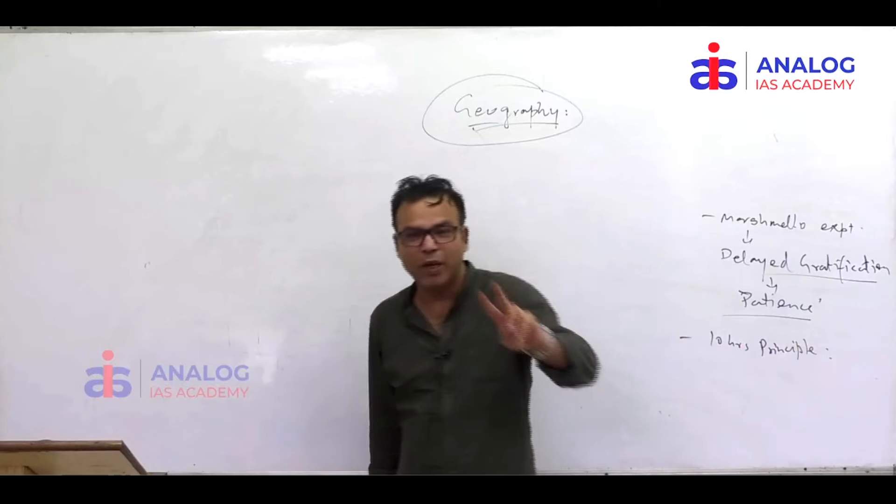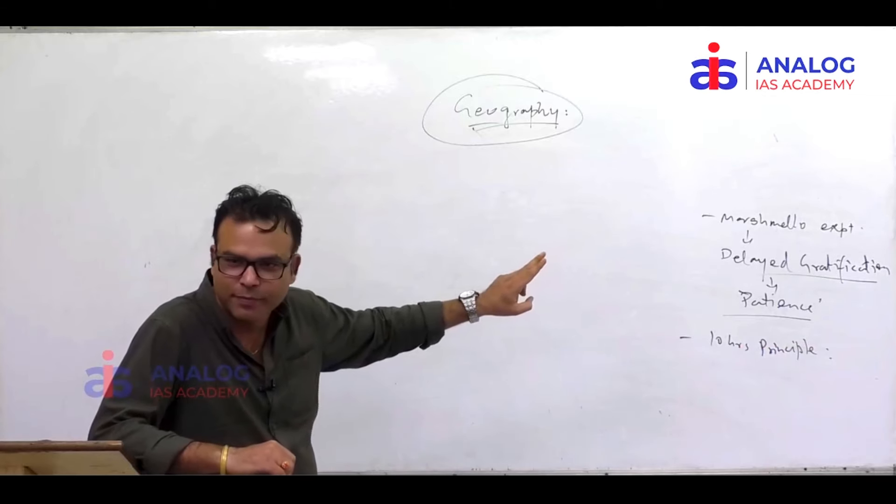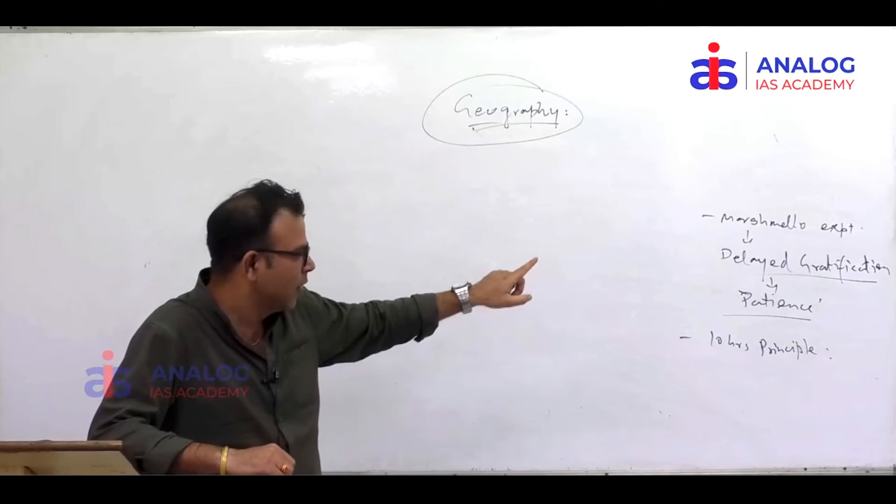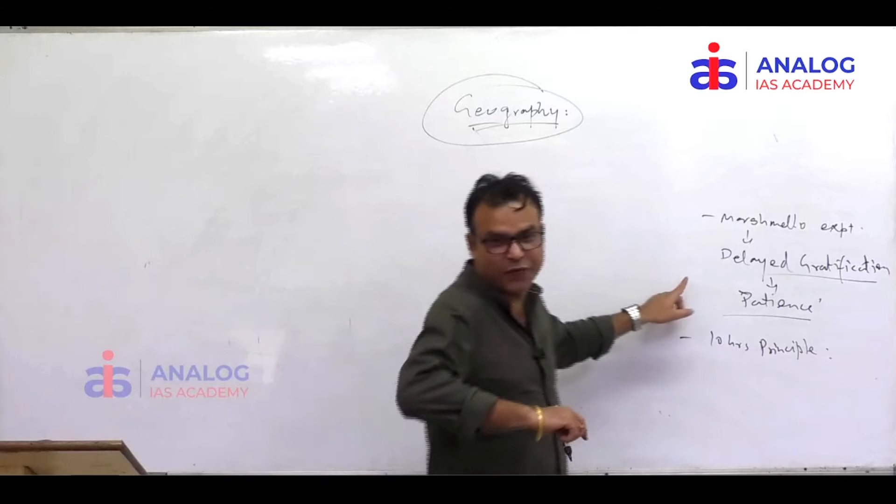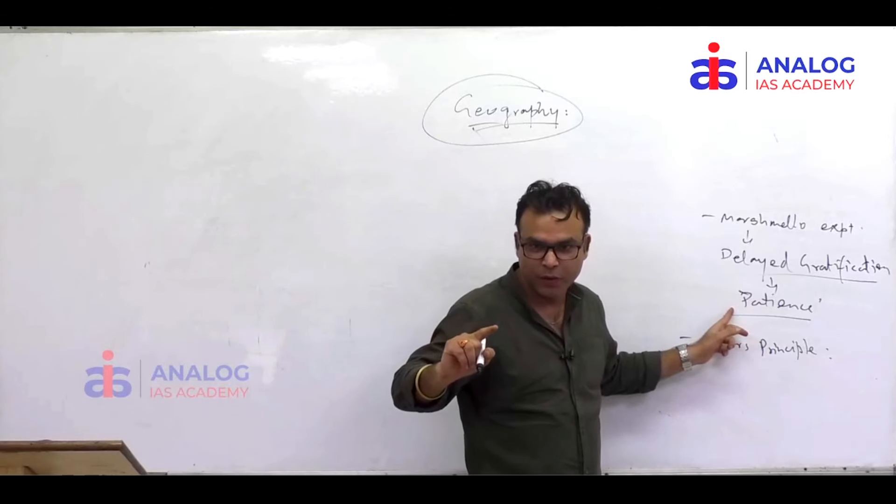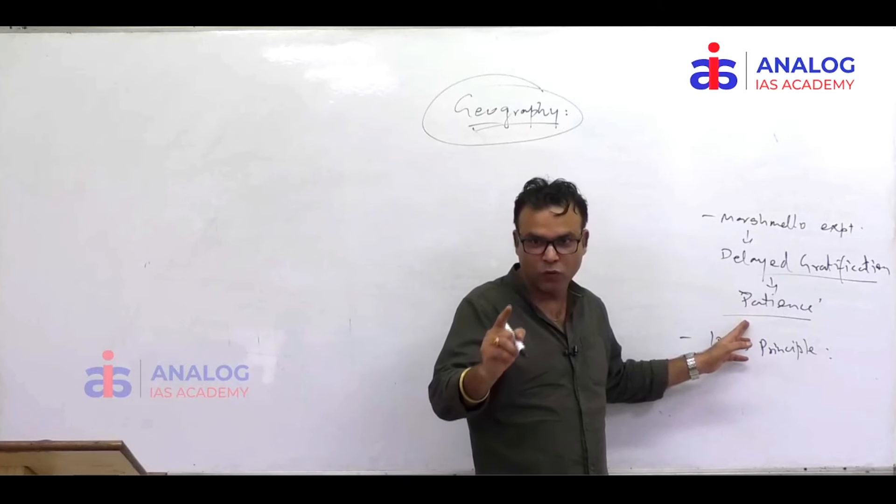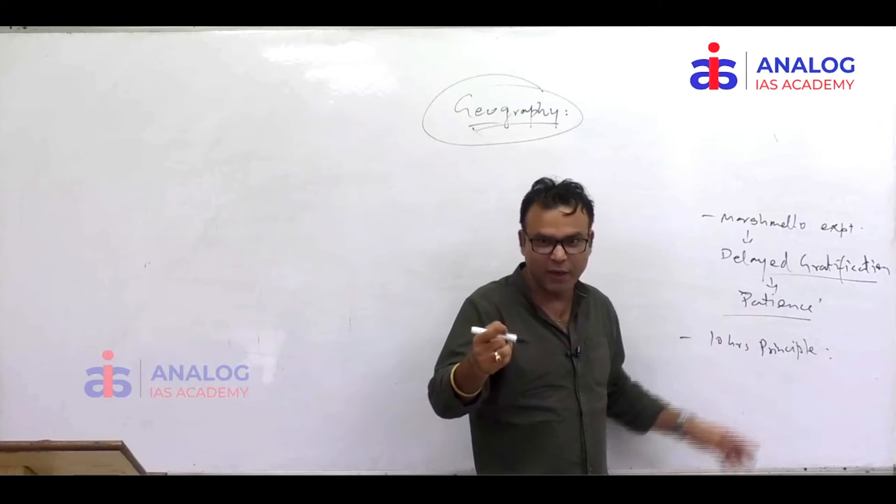Successful people have two characteristics. One is the marshmallow experiment - they're highly patient for longer goals and objectives. It's a dream, goal, target. When you have a dream, start calling it a goal.